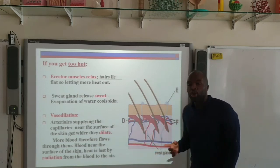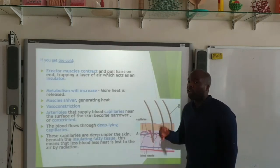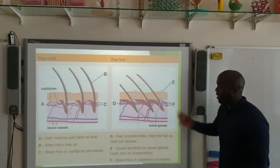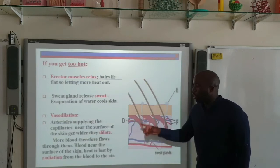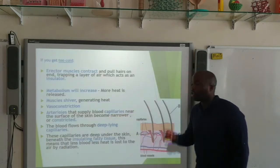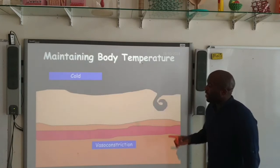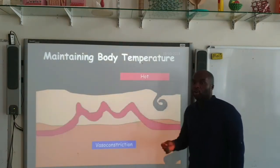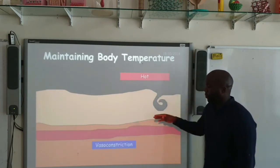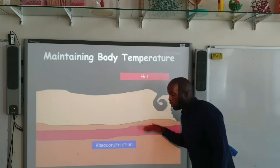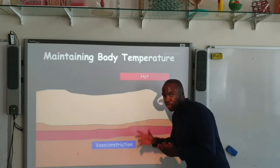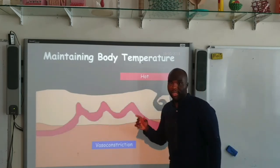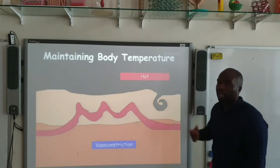So the two new concepts are: vasoconstriction, if you're too cold, and vasodilation, if you're too hot. In vasoconstriction, the blood is redirected to capillaries which are underneath the fatty tissue, so it's insulated. In vasodilation, the blood flows closer to the surface, so more heat can be lost via radiation.